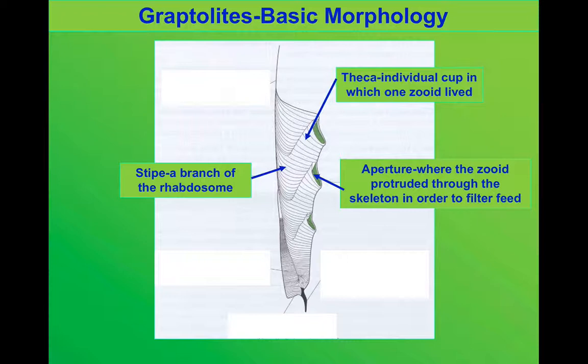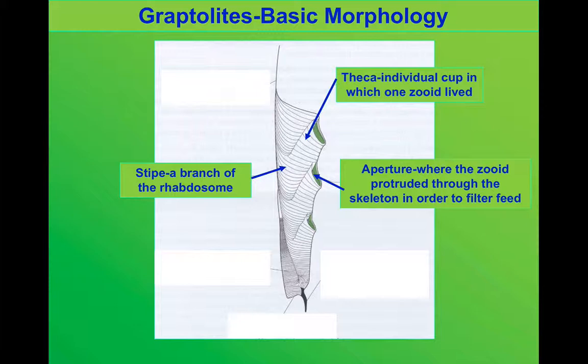To understand how they evolved, we need to know some of the basics of their morphology. Each of the branches of a Graptolite is called a stipe. In the stipe you'll see a whole series of little pockets, each of which has a little hole — an aperture — where the zooid, or the animal, poked out so it could filter feed. The animal itself lived in this pocket that we call a theca. The best analogy I've heard is that each Graptolite was like a block of flats, with the theca being the balcony for each flat.